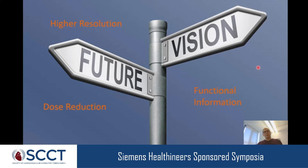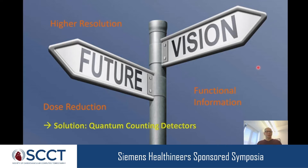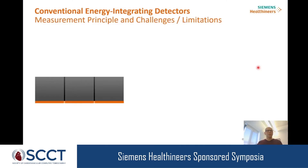However, if we want to really expand the level of resolution, reduce radiation dose further, and always have functional information available, the current energy integrating detector technology — used in all CT scanners today — cannot accomplish that. The solution is the introduction of photon counting detectors. Before explaining the principle, let me briefly review how we measure X-ray quanta in a conventional energy integrating detector.